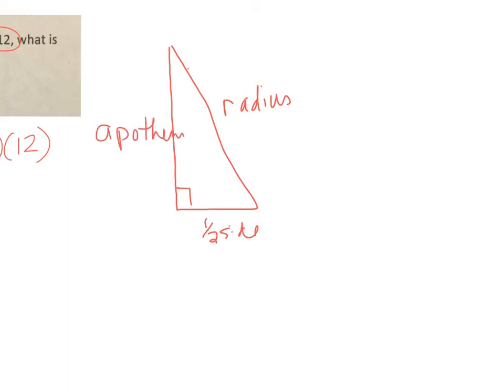We can figure out what this angle is up here by taking 360 degrees and dividing it by two times the number of sides. So if I take 360 and divide it by 20 in my calculator, I get 18 degrees.